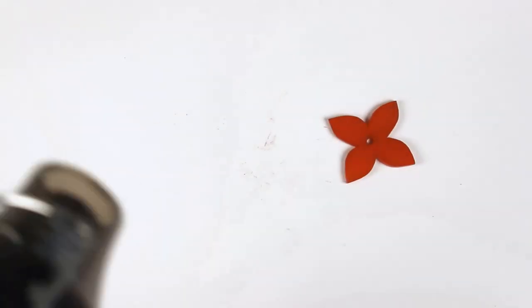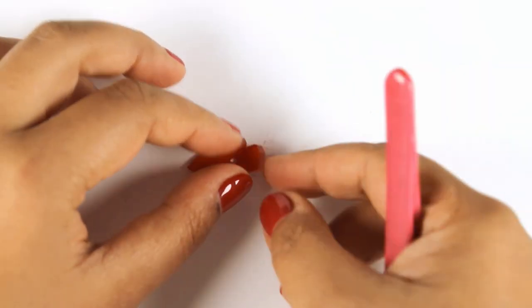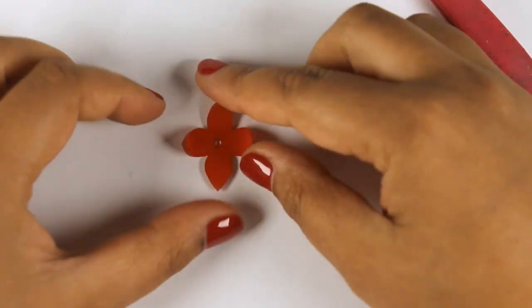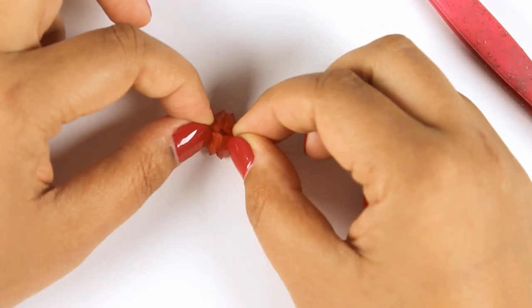While the shrink film is still hot, I am taking these flower shapes and shaping them into a 3D ball shape to form my berries for my holly and berry Christmas earrings.